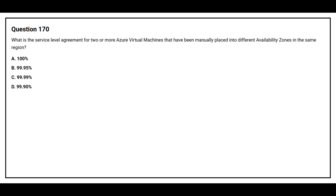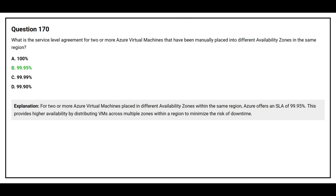Question number 170. What is the service level agreement for two or more Azure virtual machines that have been manually placed into different availability zones in the same region? The correct answer is 99.95%. Azure offers an SLA of 99.95% for two or more virtual machines placed in different availability zones within the same region, providing higher availability by distributing VMs across multiple zones to minimize the risk of downtime.